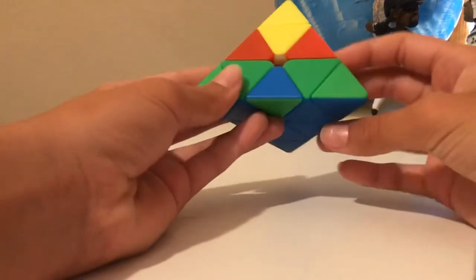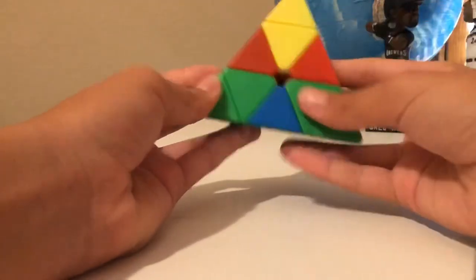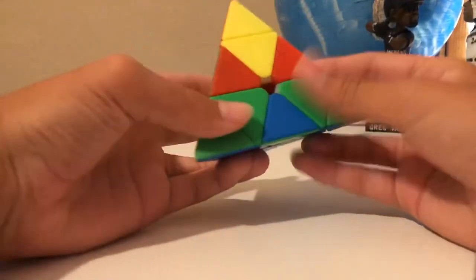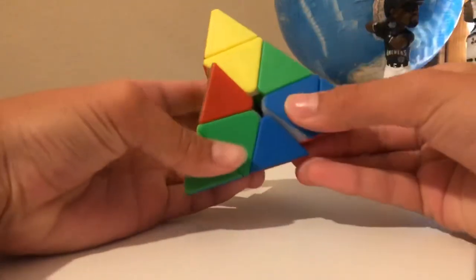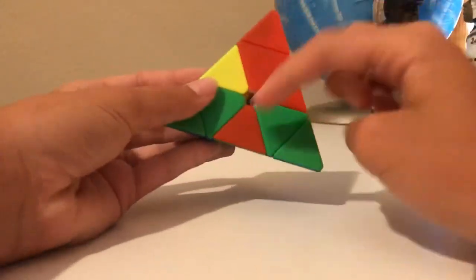Now we'll be going over what you do if you have the piece where it belongs, but it's flipped. This is fairly simple. You just need to replace it with another piece, and you can do this using R, U' R', and just like that, we have a new piece.